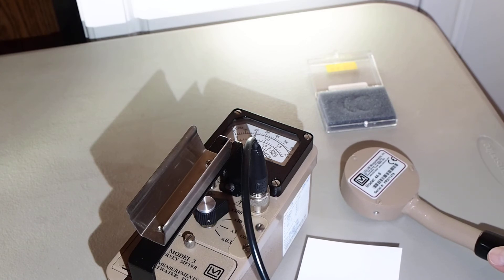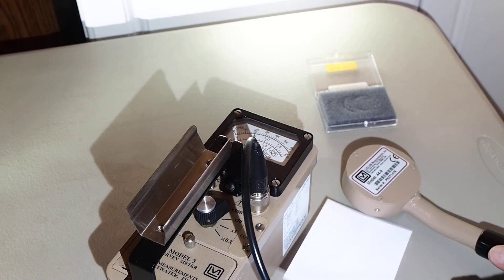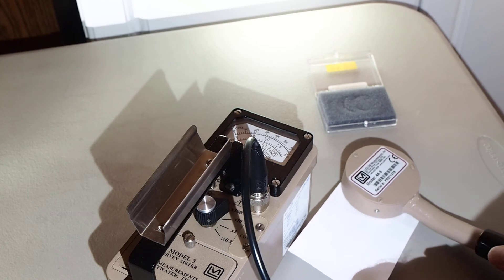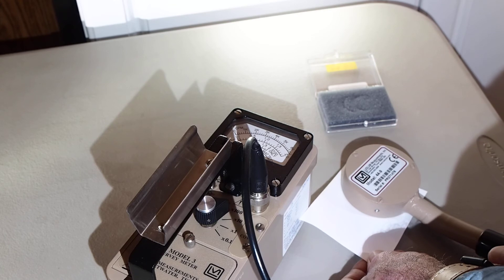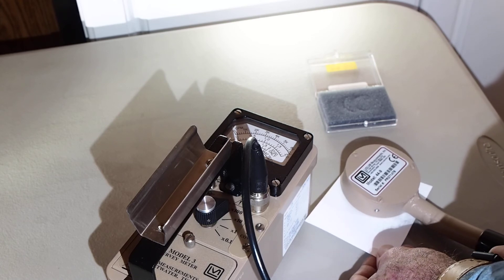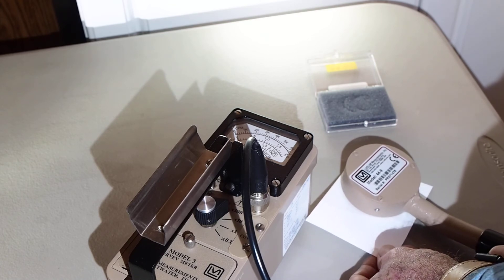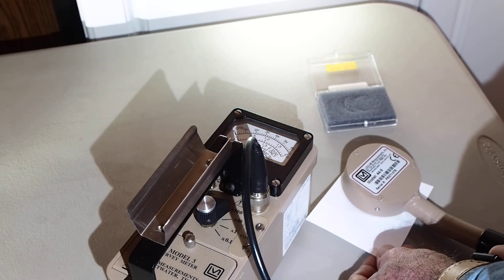We're hovering around 20,000 counts per minute there, since we're on the times 10 scale. Put the paper between the source and the detector again. And we cut off the stream of alpha particles. The only thing we're picking up more than likely is the normal background radiation.